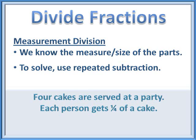Here's another example: four cakes are served at a party and each person gets one fourth of a cake. The total amount is four, the measure being repeatedly taken away is one fourth, and we want to know how many times we can take one fourth from four — the answer is 16, just like our bean problem. The first number is a whole number, the second is a unit fraction. In fifth grade we only focus on problems involving one whole number and one unit fraction for division of fractions.